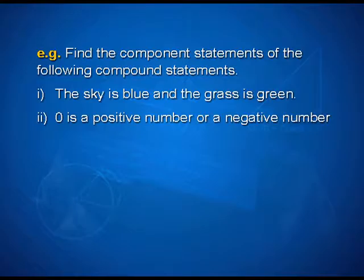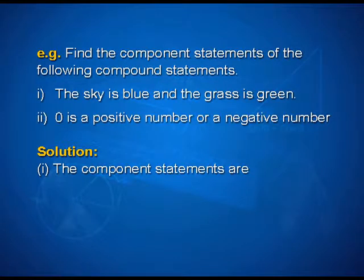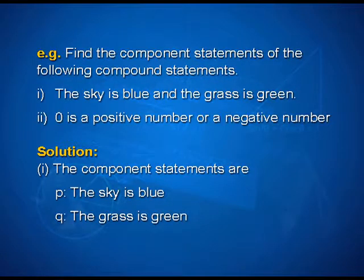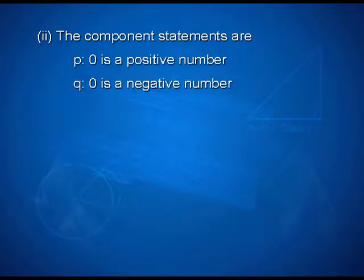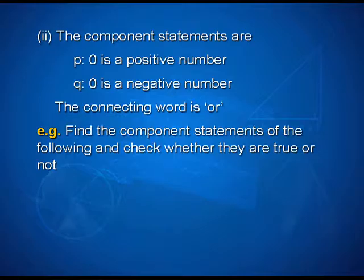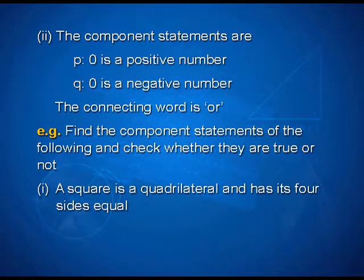Let us consider some examples. Example 1: find the component statements of the following compound statements. First: the sky is blue and the grass is green. The component statements are P: the sky is blue, and Q: the grass is green. The connecting word is AND.